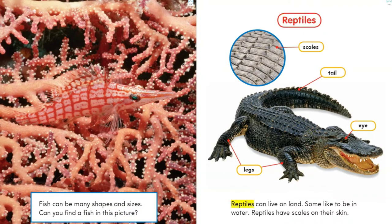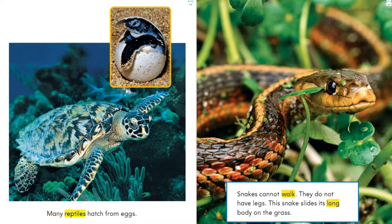Reptiles. Reptiles can live on land, and some like to be in water. Reptiles have scales on their skin. Let's look at the parts of a reptile: scales, tail, eye, legs. Many reptiles hatch from eggs. Snakes cannot walk — they do not have legs. This snake slides its long body on the grass.